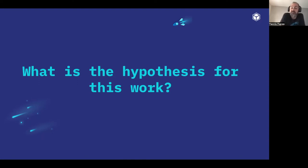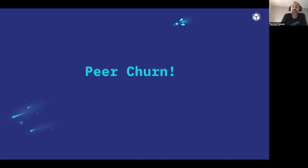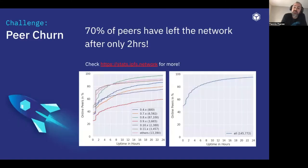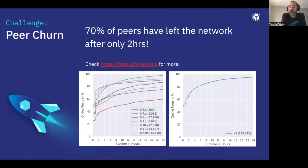If there is no provider record in the network — if all of the nodes have gone offline — then the content is unreachable, which is pretty bad. The hypothesis for this work is that because we've seen high rates of churn in the IPFS network, reaching up to 70% of peers leaving the network within only two hours of joining, many of those 20 peers have a good chance of having left the network, leaving few replicas of the provider record. We wanted to see whether there are cases in the IPFS DHT where provider records are basically not live anymore and therefore content is unreachable.